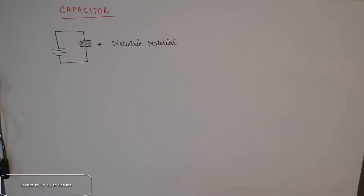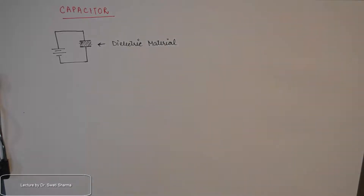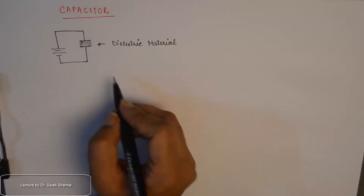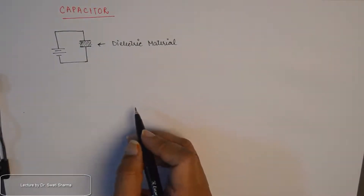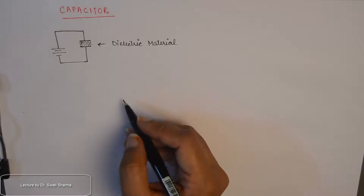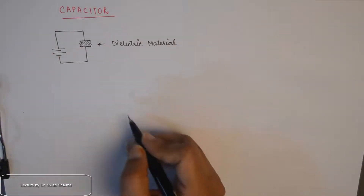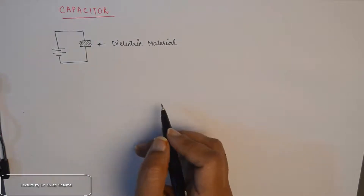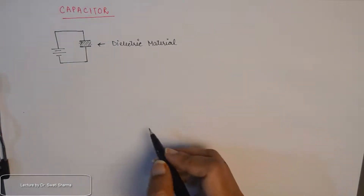Hello everyone, welcome to a new tutorial in the series of basic electrical and electronics engineering. In this tutorial we will talk about a very basic network element — a capacitor. I will try to discuss all the aspects of a capacitor, how it is capable of storing energy and how this energy discharges. A capacitor is the second most popular passive network element used after a resistor, and its basic function is to store electrical energy in the form of an electric field.